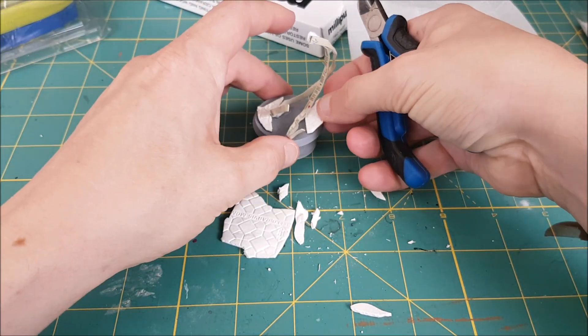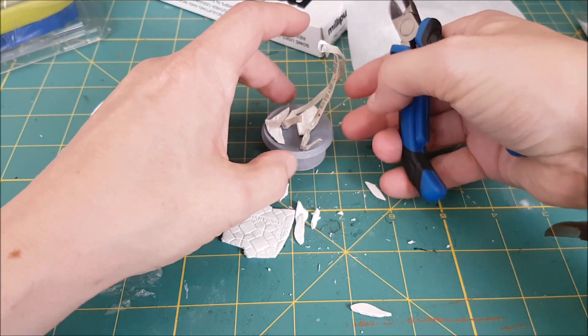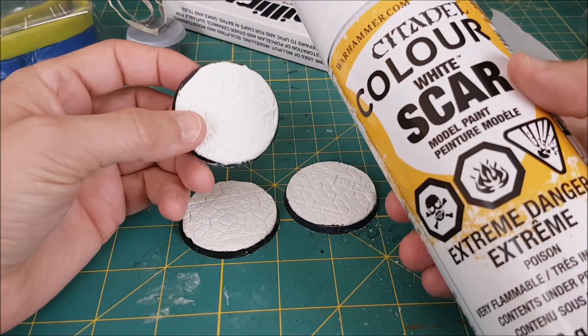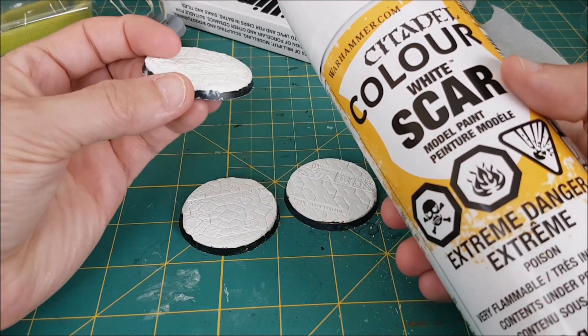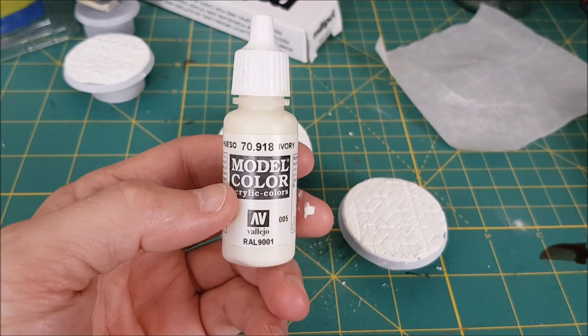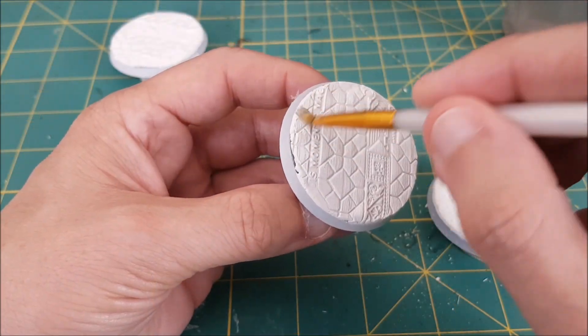Now, you can of course paint these any way you want, but I'll give you a brief explanation of what I did with mine. The first thing I did was spray prime all of these with some white paint. Then I took an ivory color and I put a layer of that over all of the white primer.